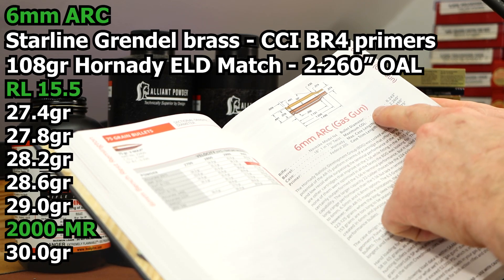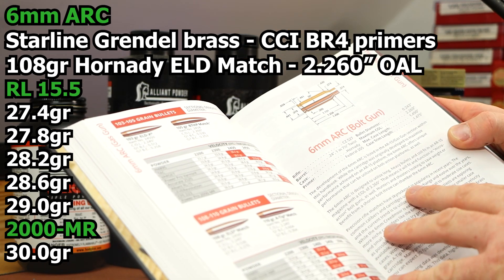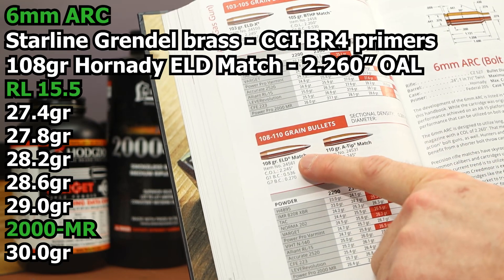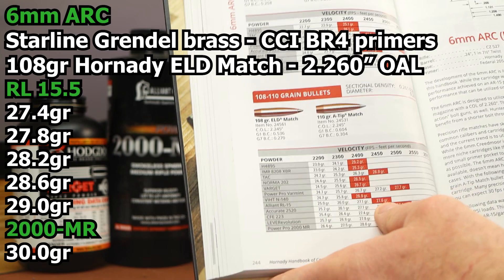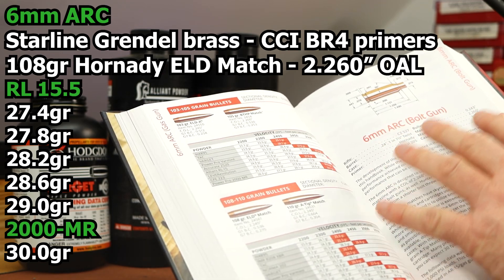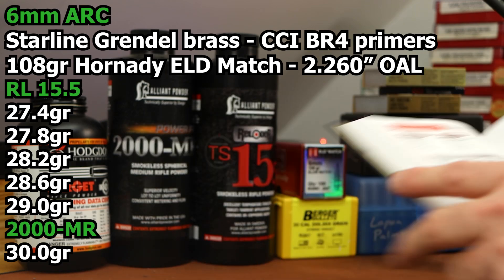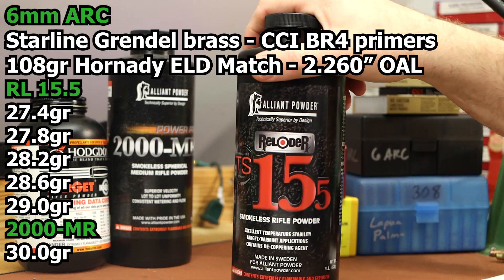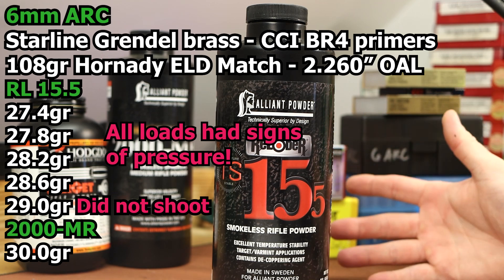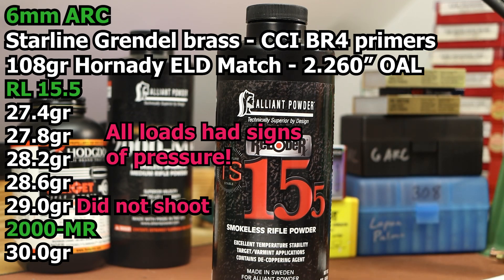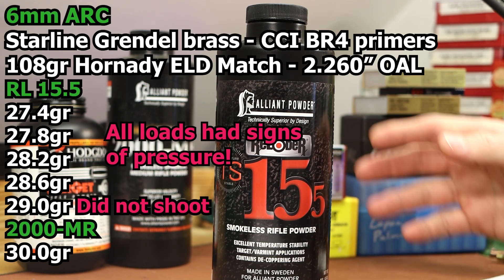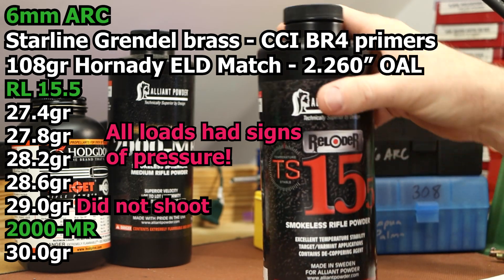The Hornady manual has gas gun data that maxes out at 52,000 psi and bolt gun data that goes to 62,000 psi. Even with their gas gun data for the 108 grain ELD Match, Alliant Reloader 15 has a max charge of 27.6. Over in the bolt gun data it's 28.9. So if we can shoot 28.9 grains of Reloader 15 in six ARC, surely we can shoot 29.0 of 15.5 which is slower burning and bulkier. I really don't have any fear of pressure today. I would be shocked if we really see outstanding velocity numbers.